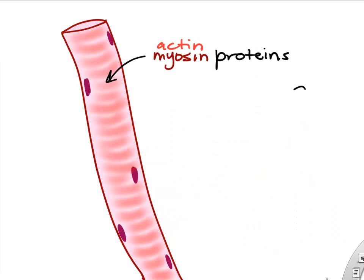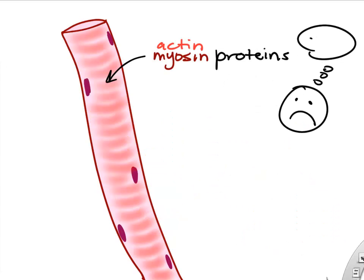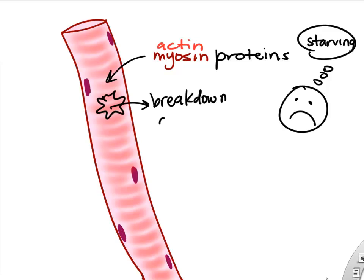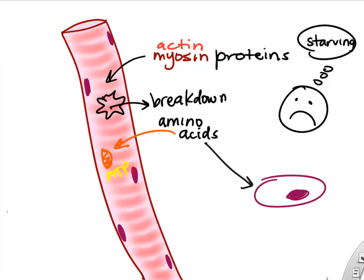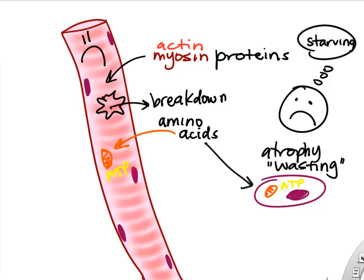One thing to mention: if you're really starved of nutrients, you can start to break down all that actin and myosin protein inside your muscle cells as a reserve. You can break those proteins down to amino acids, which can then go to cells to make ATP in the mitochondria. Of course, your muscles will atrophy if that's the case.